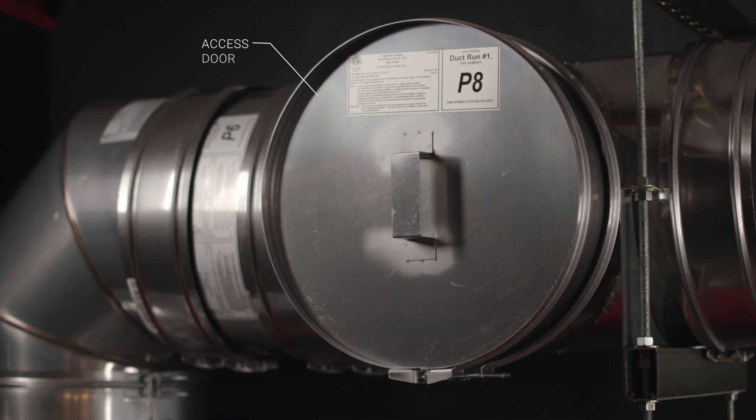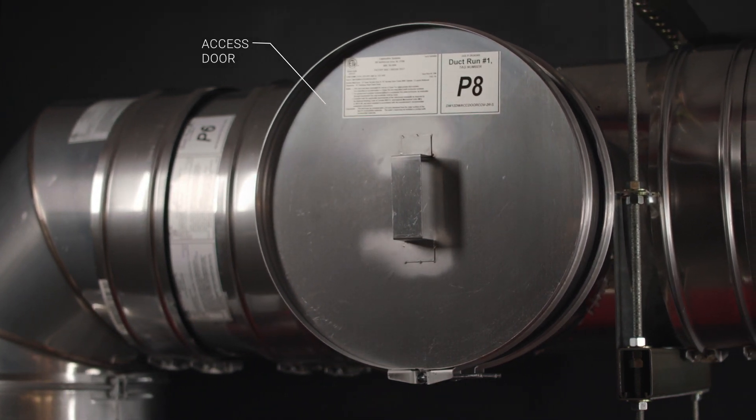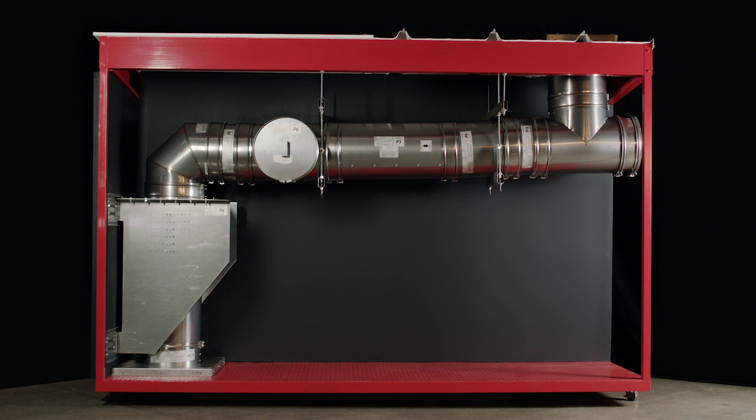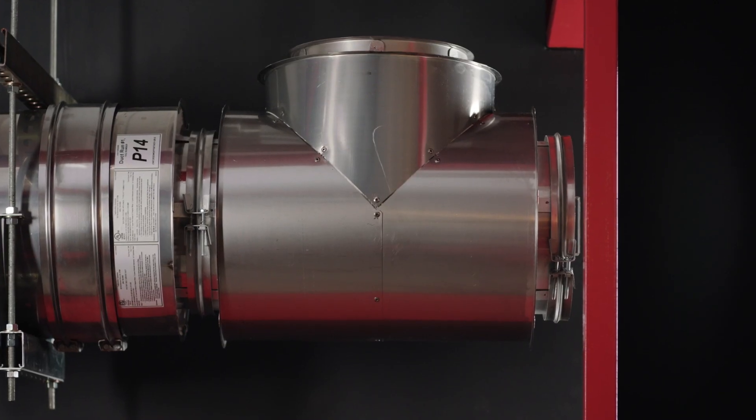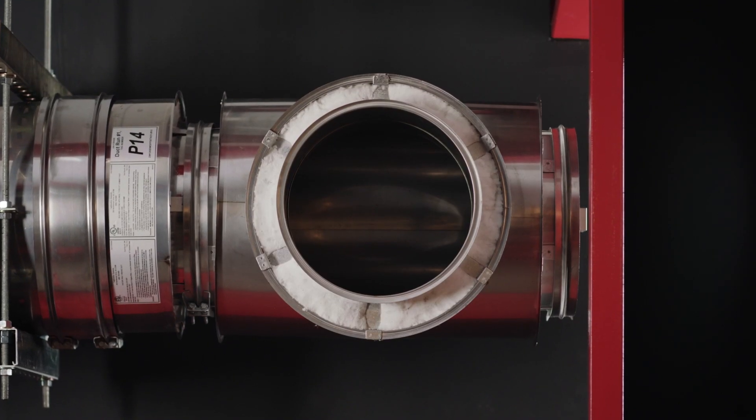Access doors or clean outs are required on all grease ducts for proper cleaning and fire prevention. The location of the access door can be found in your installation drawings. All access doors must be positioned on the top or side of the duct run.